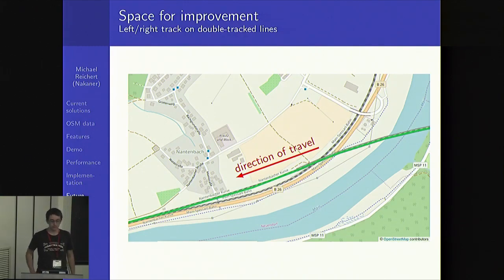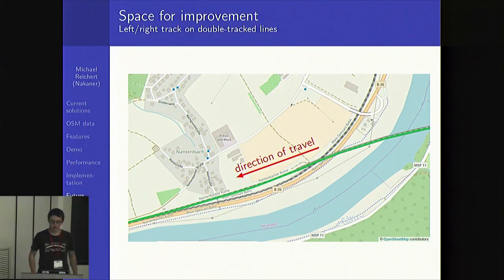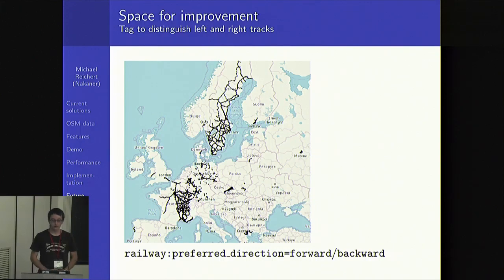Now I'll come to the end of my talk. There's still space for improvement. My routing does not distinguish left and right tracks on double-tracked lines. For example, in Germany trains run on the right track in the direction of travel, but in one case it's a long left curve with crossovers before and after, and that's why the routing prefers to use the left track. There is already support for this in OpenStreetMap data using the tag railway:preferred_direction=forward/backward/both to indicate the default direction on the track — it's usually used in Sweden and the east of France, but not in Germany.